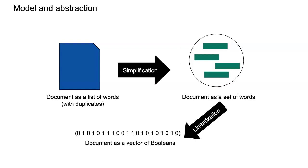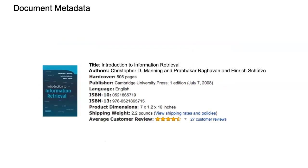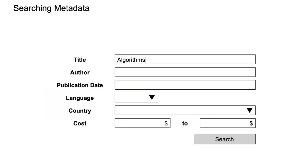One approach before the vector space model is parametric search. Until now our abstraction is that a document is a set of words — expressed as Boolean vectors, either a word belongs to a document (one) or it does not (zero). This is called linearization: creating an artificial ordering of the words for the vector. Now, zooming out — in a library or online shop, it's not just the content of the book; there's also metadata: title, author, summaries, tags, dates, language, and so on.